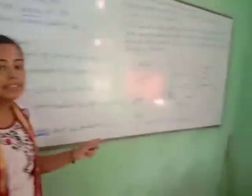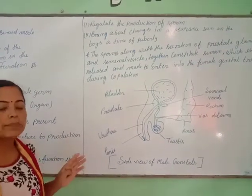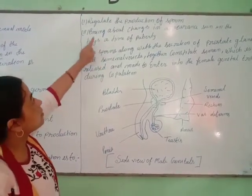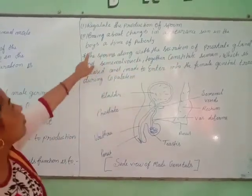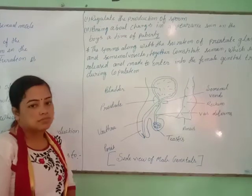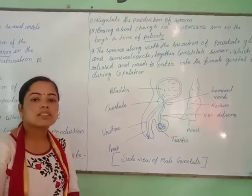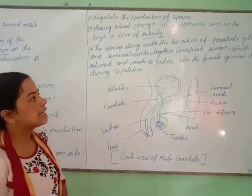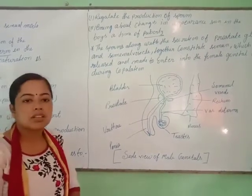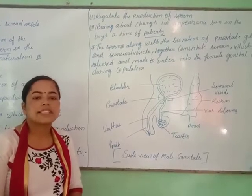Let's see the functions of testosterone. First, it regulates the production of sperm, which is responsible for reproduction. Second, it brings about changes in the appearance of boys at the time of puberty. Puberty is the age where boys grow up — a beard appears on their face and hair grows under the arms and on the body. This is the age of transition from infant to adult.